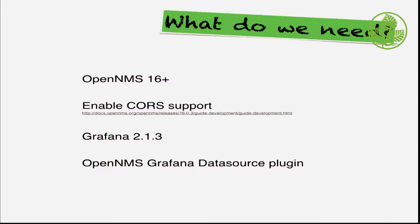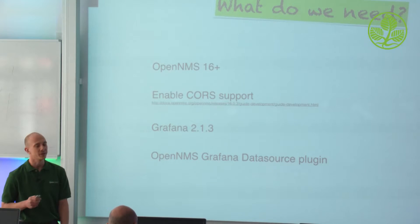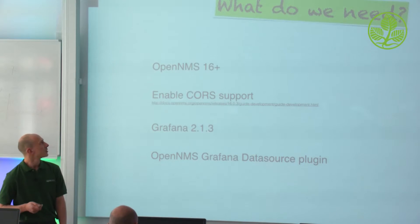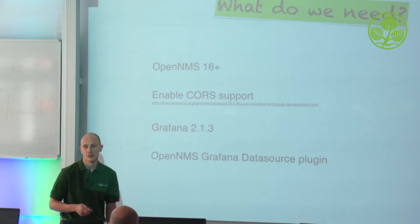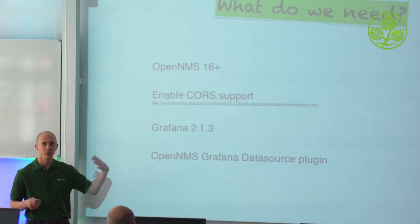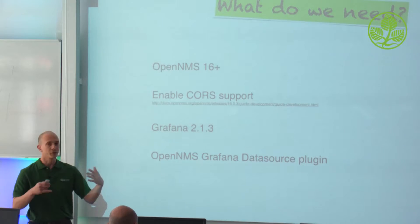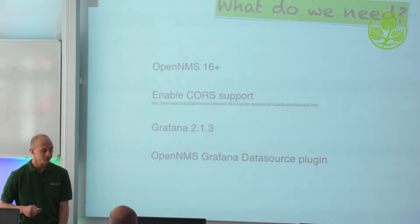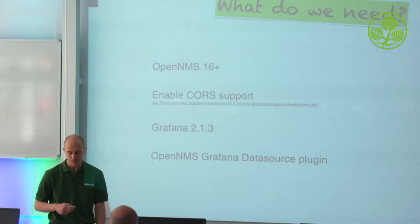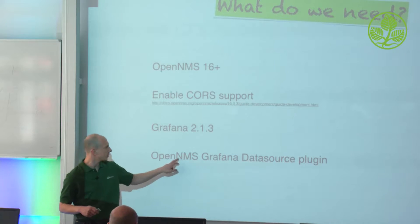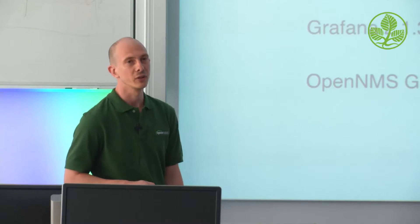What do you need to install or use this in production? You need basically OpenMS 16 plus — any version from OpenMS 16 onwards has the measurement API, which provides the data over REST. You have to enable CORS support, which is necessary because we have REST calls from a different web application. You currently need Grafana 2.13, and you have to install the OpenMS Grafana data source plugin into Grafana itself. That's basically everything you need.